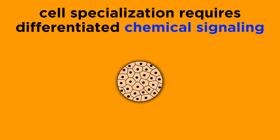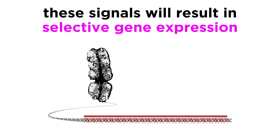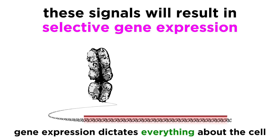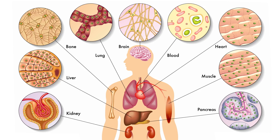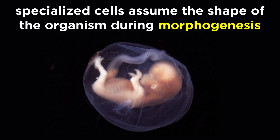In order for cell specialization to occur, all that has to happen is for different cells to receive different signals that each guide gene expression in that particular cell, because gene expression dictates all of the activities of the cell. We can imagine that certain cells are receiving signals that result in the expression of particular genes that produce a particular shape and set of functions for that cell. In this way, cell specialization accounts for all of the different types of cells in an animal, from muscle tissue to a neuron to any other type of cell. Then this mass of different specialized cells must assume a specific three-dimensional shape, and this process is called morphogenesis.